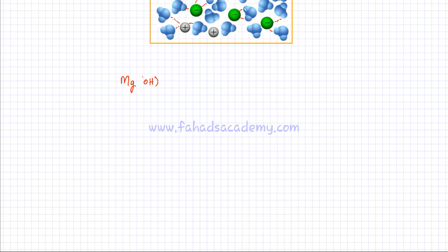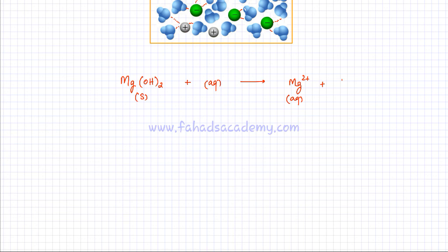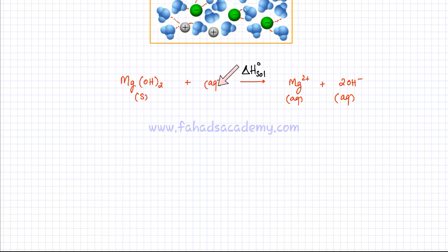I'm now going to describe this process in slightly more technical terms, using the example of magnesium hydroxide. When you dissolve Mg(OH)₂, a solid ionic lattice, the overall reaction gives Mg²⁺ (aq) and 2OH⁻ (aq). The enthalpy change for this overall reaction is called the standard enthalpy of solution, when done under standard conditions.